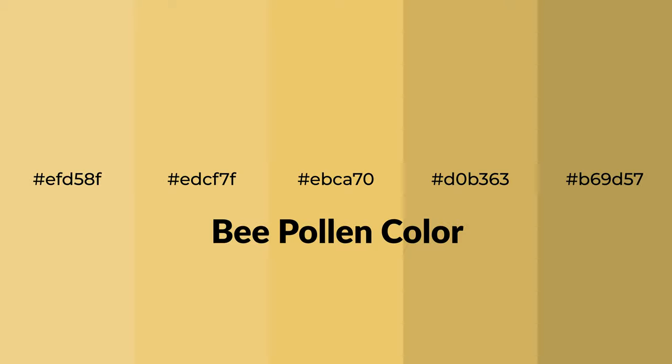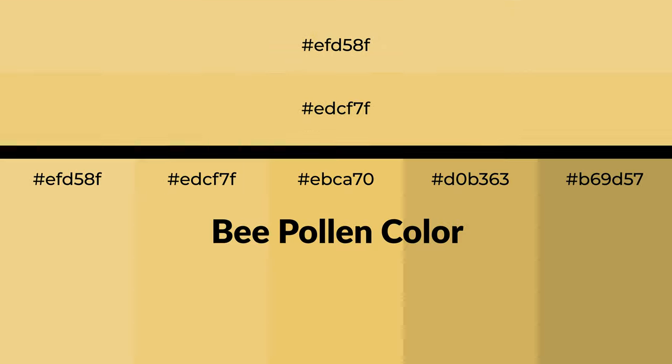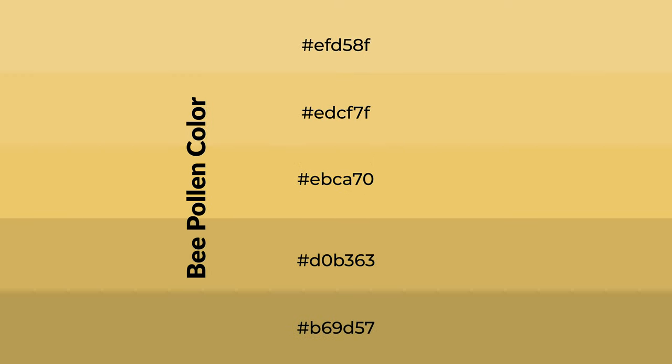Warm shades of bee pollen color with yellow hue for your next project. To generate tints of a color, we add white to the color — tints create light and exquisite emotions. To generate shades of a color, we add black to the color, and it is used in patterns, 3D effects, and layers. Shades create depth and drama.